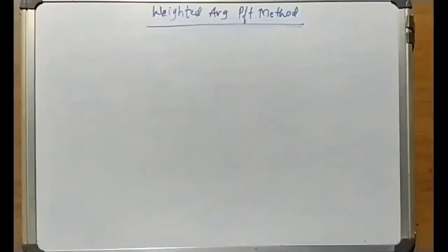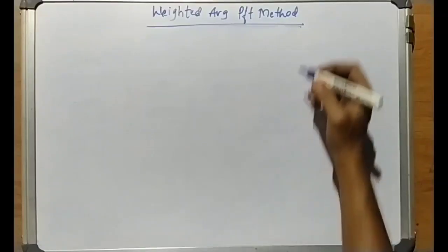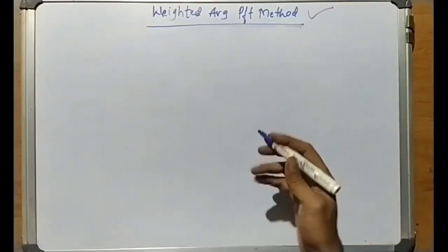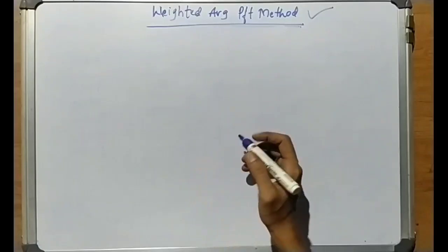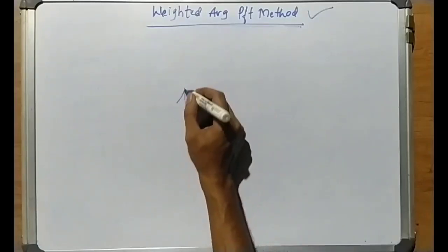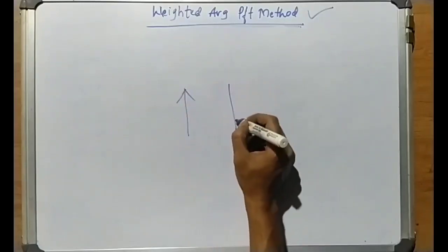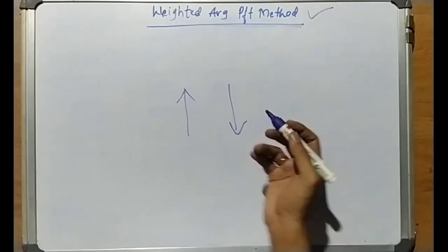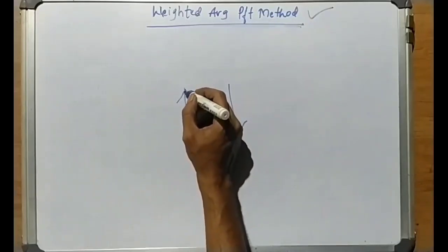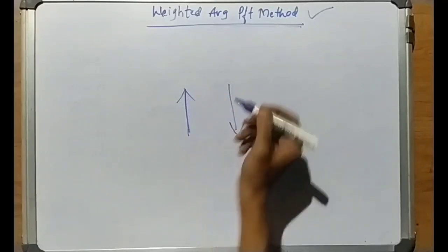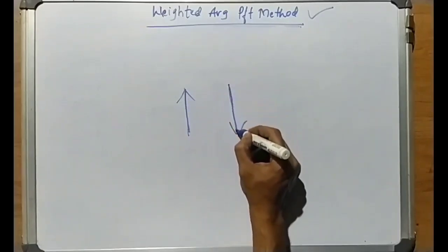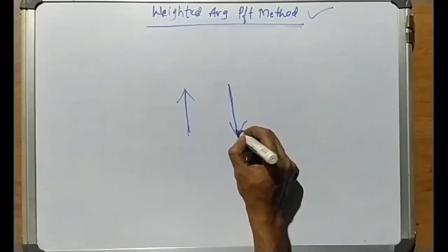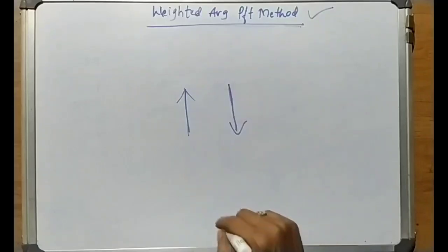Hello everyone, welcome back. In this session we are going to start with a new method called the Weighted Average Profit Method. This method is used when the past years' profits are continuously either increasing or decreasing. We are going to follow the Weighted Average Profit Method for continuously increasing or continuously decreasing profit trends.